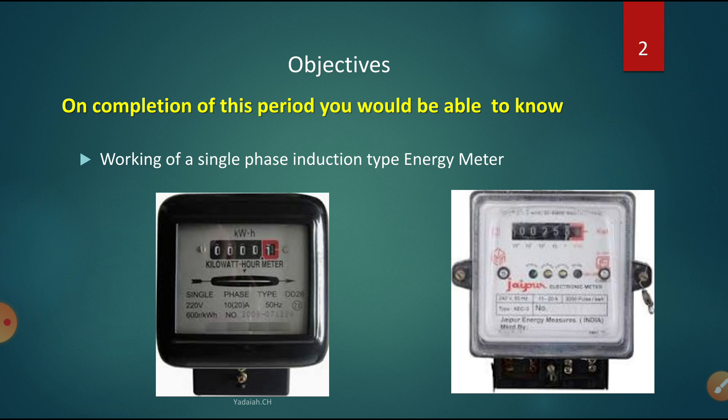We are required to stop the device. The deflecting torque is produced with the help of the driving system, and the aluminum disc rotates. We are going to control the rotation of the aluminum disc with the help of the braking system. For this purpose, I have used two permanent magnets placed at opposite sides diametrically. By adjusting the magnets, the speed of the aluminum disc will change.